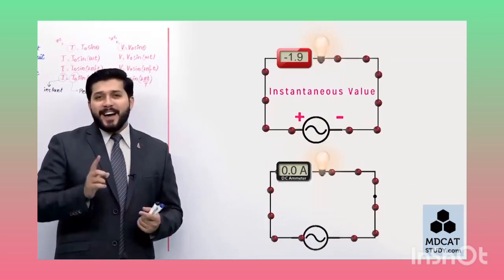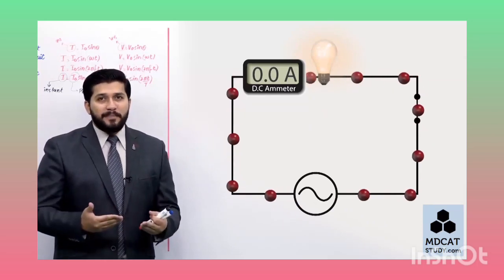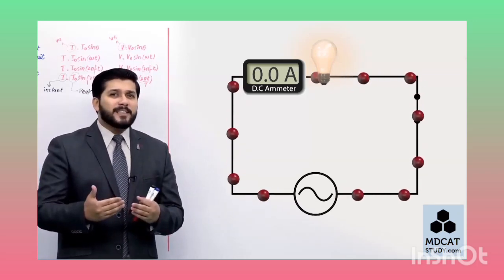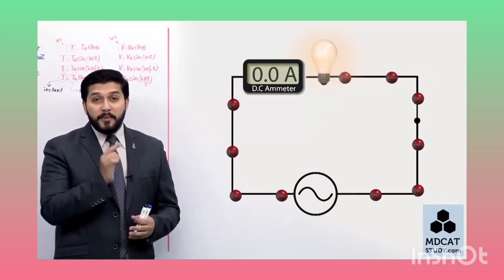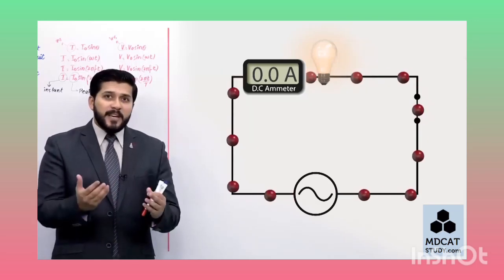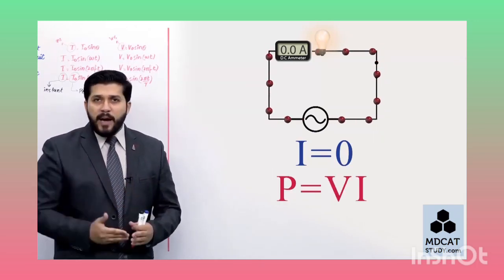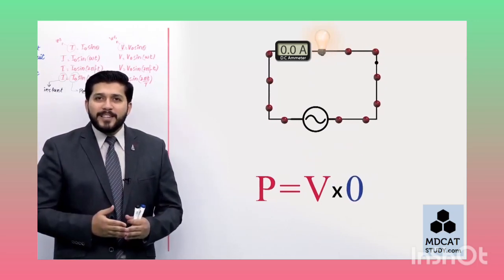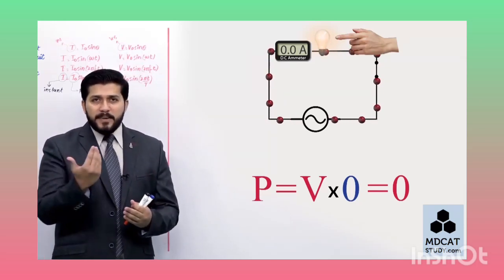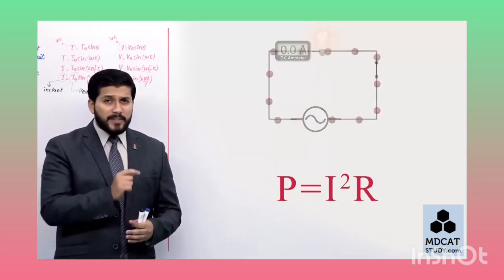مسئلہ یہ ہے کہ نہ instantaneous value کام کی ہے نہ average value - کیونکہ average zero آ رہا ہے۔ لیکن average کسی نہ کسی صورت ضروری ہے تاکہ circuit کا roughly consumption پتا لگے۔ اب bulb جل رہا ہے، یعنی power zero نہیں ہے - لیکن average current zero ہے۔ اگر current zero ہے تو power = vi سے power بھی zero آنی چاہیے، مگر bulb جل رہا ہے! Power کا دوسرا formula یاد کریں: P = i²R۔